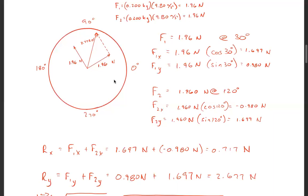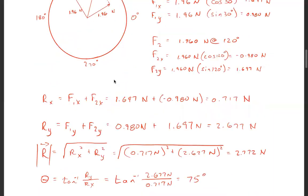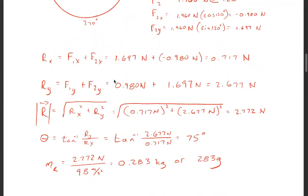So we summed the components to come up with Rx and Ry. Now to get the magnitude, you take the square root of the sum of the squares of the components. So 0.717 Newtons squared plus 2.677 Newtons squared, take the square root of that, you get 2.772 Newtons.